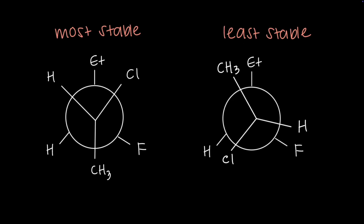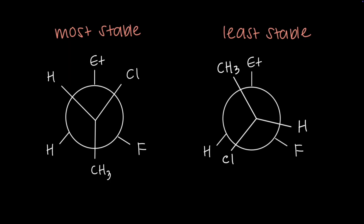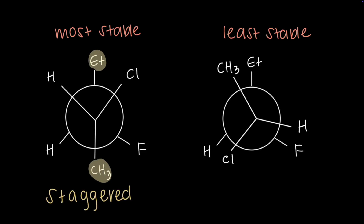These questions almost always ask for the most stable and least stable conformations. That means we need to think about three things: which bond we're looking down, which carbon is in front and which is in back, and what the largest substituents are on each carbon. The most stable Newman projection will always be in a staggered conformation with the largest groups anti to each other, meaning 180 degrees apart.